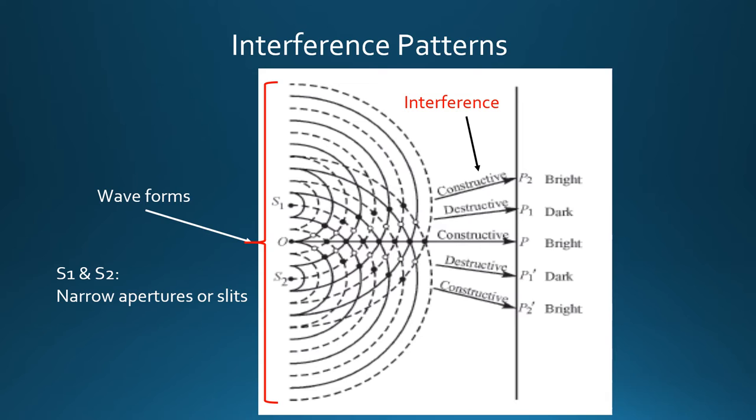This is another figure showing basically the same thing. S1 and S2 are the two slits, but now we have constructive, destructive, and so forth interference patterns. Bright, dark, bright, dark. And you will see this in the results of our lab.